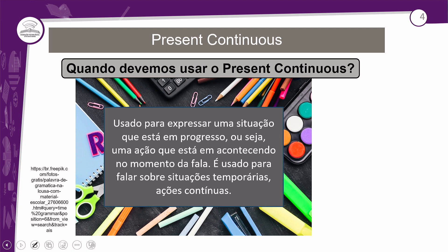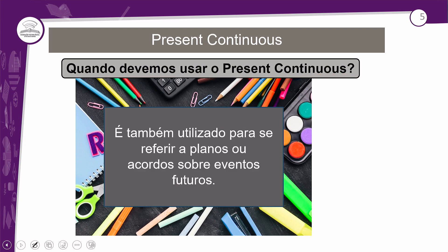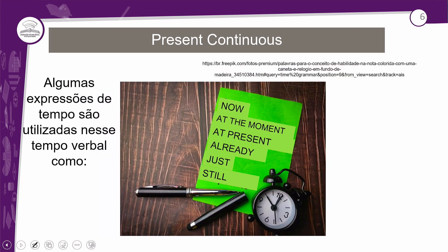Vamos falar sobre o present continuous. Quando devemos usá-lo? Ele é usado para expressar uma situação que está em progresso, uma ação que está acontecendo no momento da fala. É usado também para falar sobre situações temporárias e ações contínuas. Além disso, é utilizado para se referir a planos ou acordos sobre eventos futuros. Não são as únicas situações, mas essas são as principais.